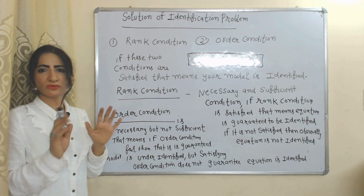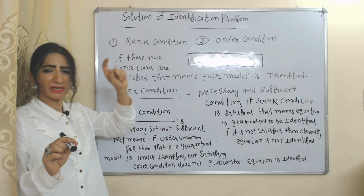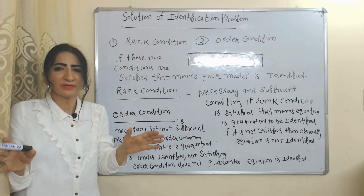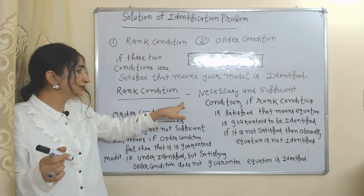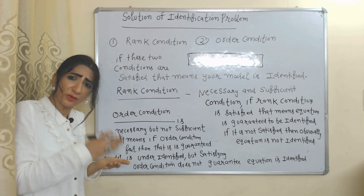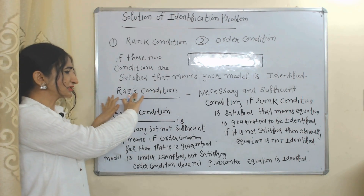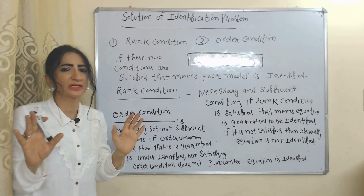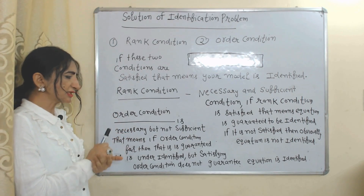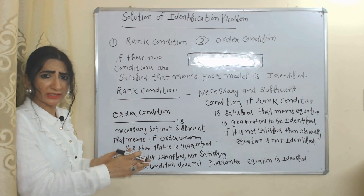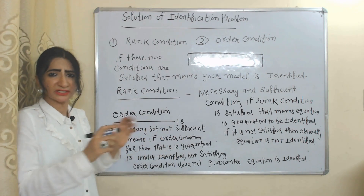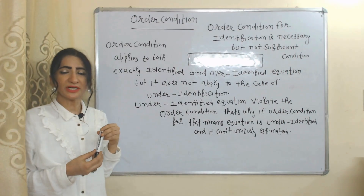Now, the solution to the identification problem. There are mainly two solutions: rank condition and order condition. If these two conditions are satisfied, that means our model is identified. Rank condition is necessary and sufficient — if rank condition is satisfied, the equation is guaranteed to be identified; if not satisfied, the equation is not identified. On the other hand, order condition is necessary but not sufficient — if order condition fails, the model is guaranteed to be under-identified, but satisfying order condition does not guarantee the equation is identified.